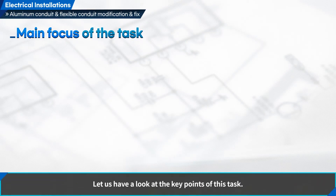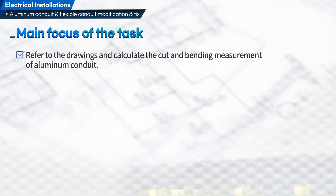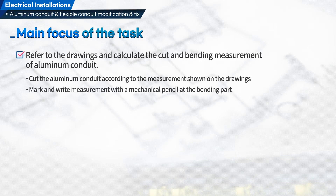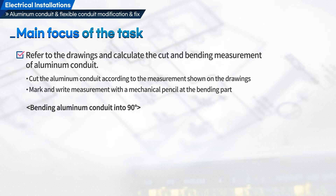Let us have a look at the key points of this task. First, refer to the drawings and calculate the cut and bending measurement of aluminum conduit. Cut the aluminum conduit according to the measurement shown on the drawings. Mark and write the measurement with a mechanical pencil at the bending part. Then bend the aluminum conduit to 90 degrees.